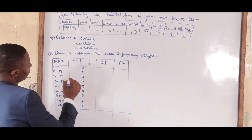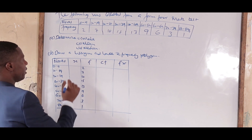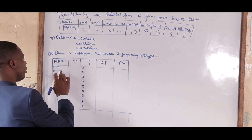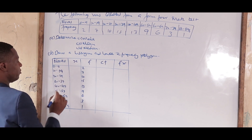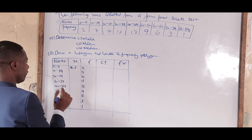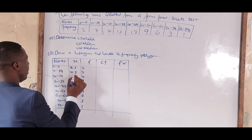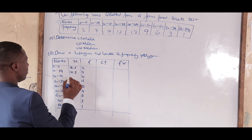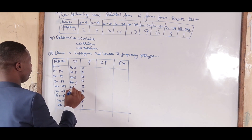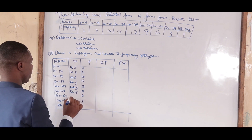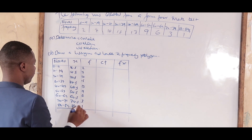Now fill in the midpoints (x). The midpoint is found by adding the two class boundaries and dividing by 2. So: (0+9)/2 = 4.5; (10+19)/2 = 14.5; then 24.5, 34.5, 44.5, 54.5, 64.5, 74.5, and 84.5.